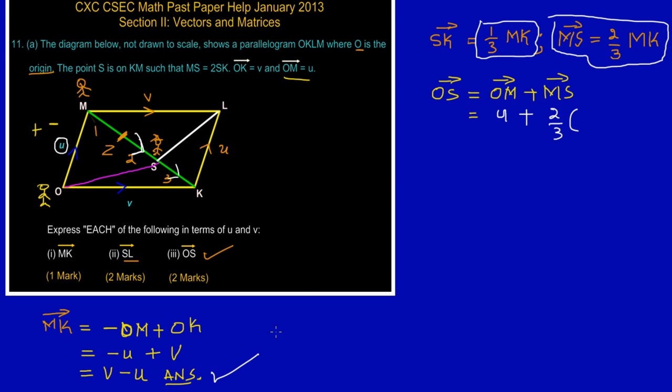However, we found MK earlier, that was the first thing in part one here, and MK was really v minus u, that's what we found MK to be, which is v minus u. So here now my friends, what we have here is really this is u...